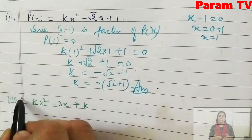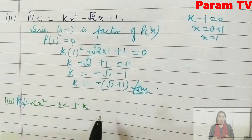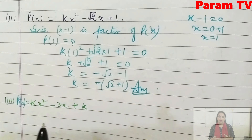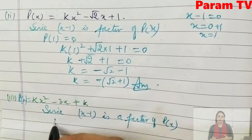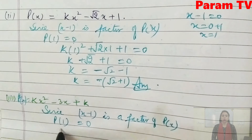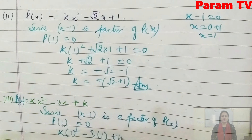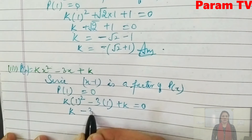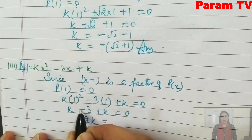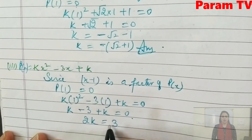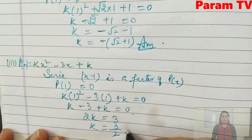Next part: p(x) = kx² - 3x + k. Since x-1 is a factor, p(1) must be 0: k(1)² - 3(1) + k = 0 → k - 3 + k = 0 → 2k = 3 → k = 3/2.